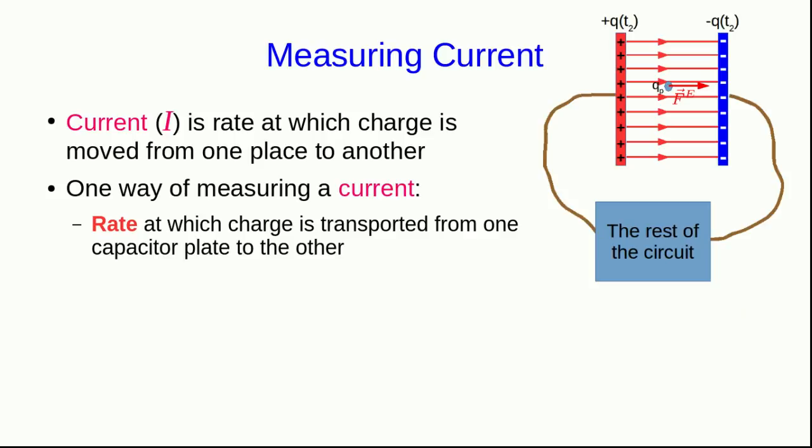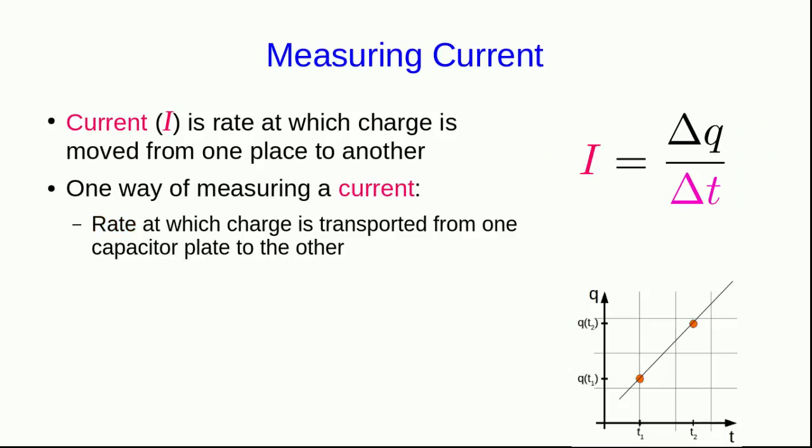So as charge is transported, the E field inside the capacitor increases, and the electric force on our probe charge will increase. And so we know that we can relate that electric force to the amount of charge on the plates, and so we can find the charge on the plates at different times. We could plot that up, and now the slope of that graph is the change in charge on the plates per unit time, and that is the current.